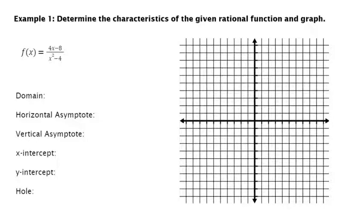For these problems, we're going to start the same way we usually would. First, factor to find our domain. So on the bottom, it's a difference of two squares: x plus 2, x minus 2. On the top, I'm going to pull out a 4. For my domain, I take the opposite. So it cannot equal 2 and cannot equal negative 2.